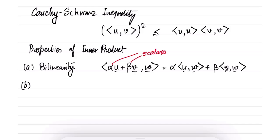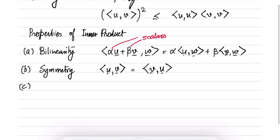The second property is symmetry: the inner product of u with v equals the inner product of v with u. The third property is that a norm should be induced from the inner product, meaning the inner product of u with u is greater than or equal to zero. If any function taking two inputs satisfies all three of these properties, then it is a valid inner product.